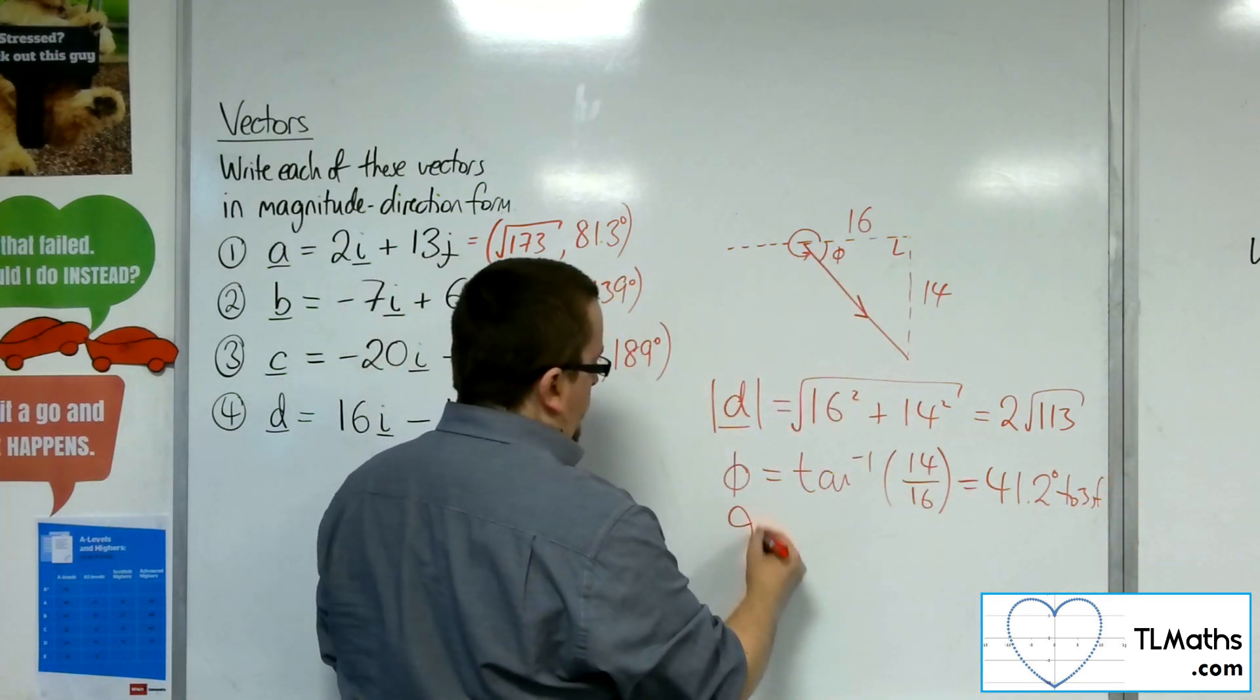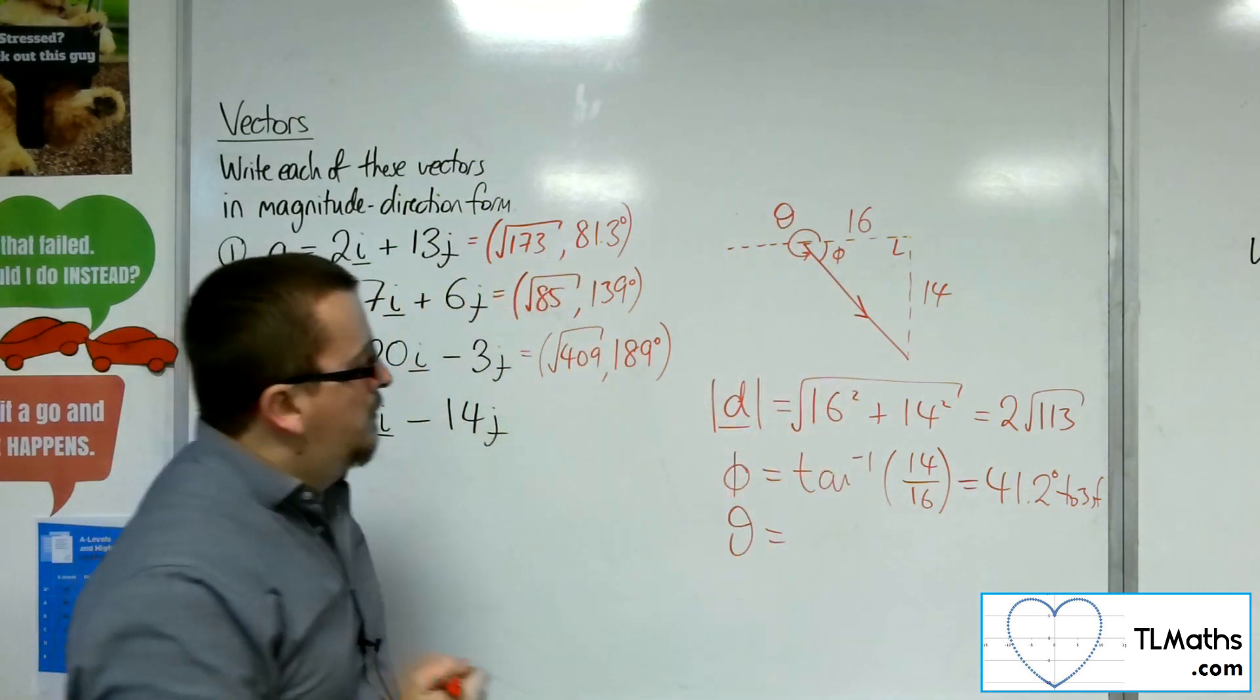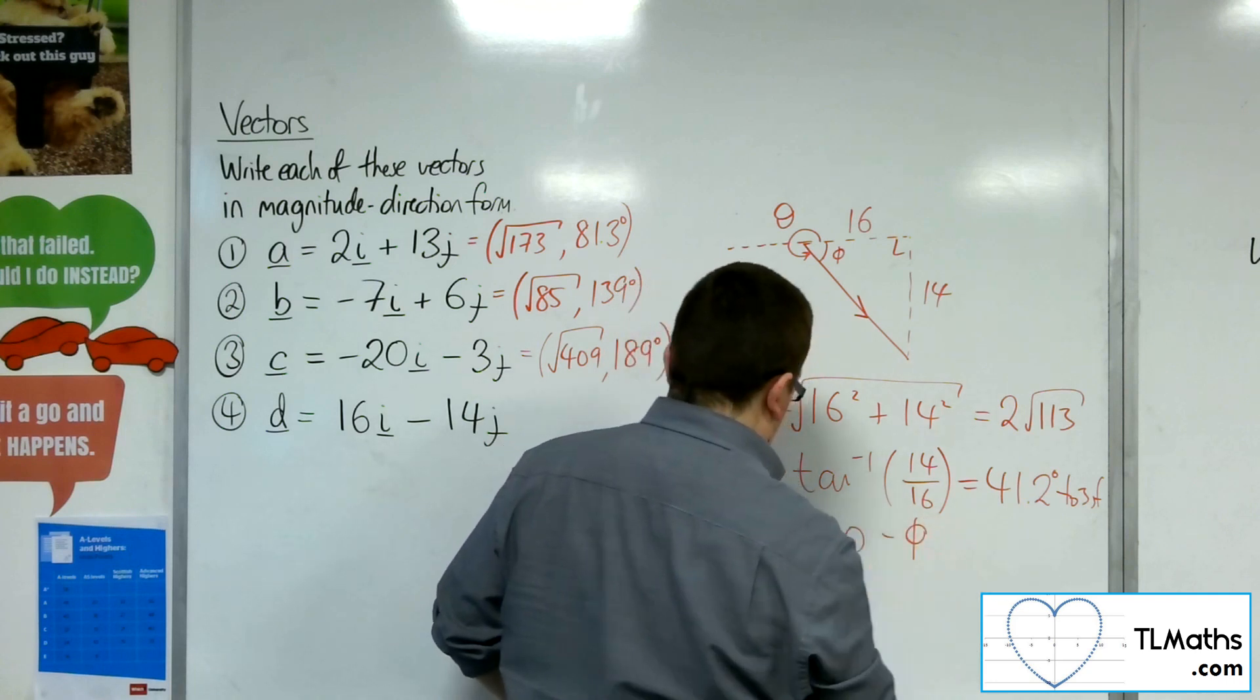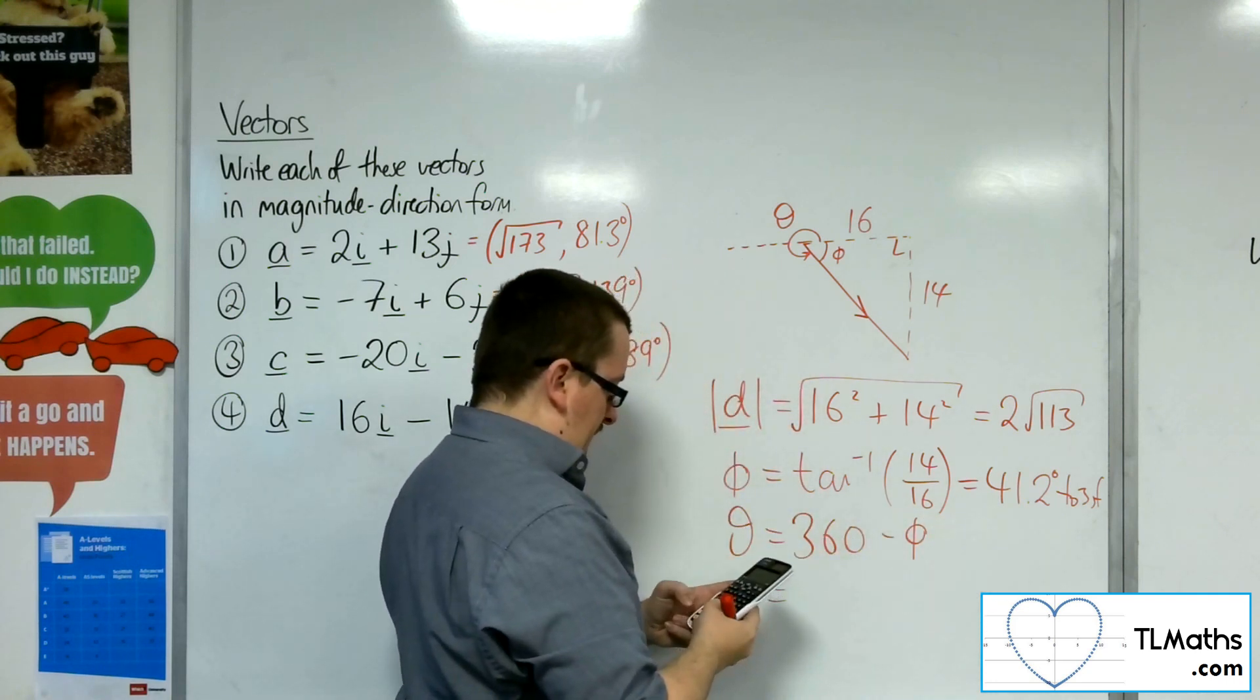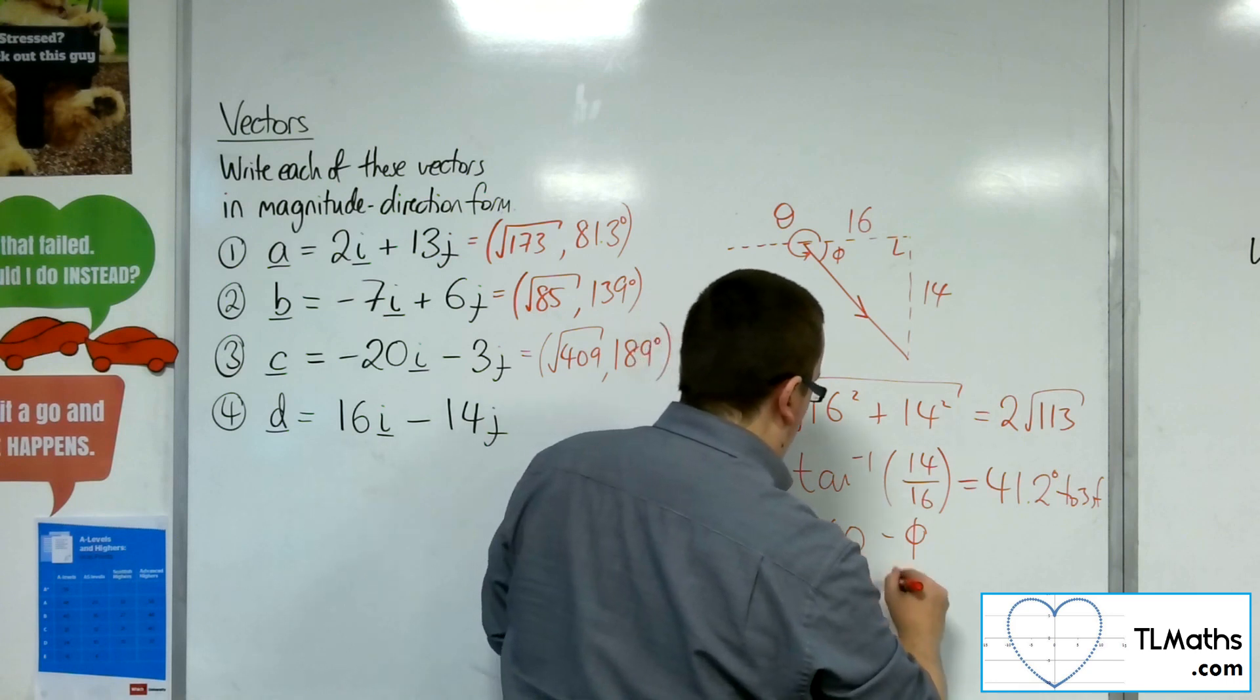So, theta, the direction, will be 360 take away phi. So, 360 take away phi is 319 degrees to 3 sig fig.